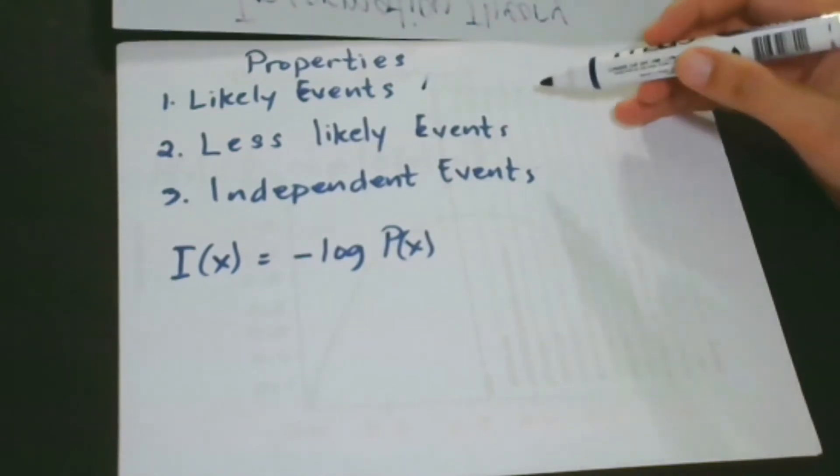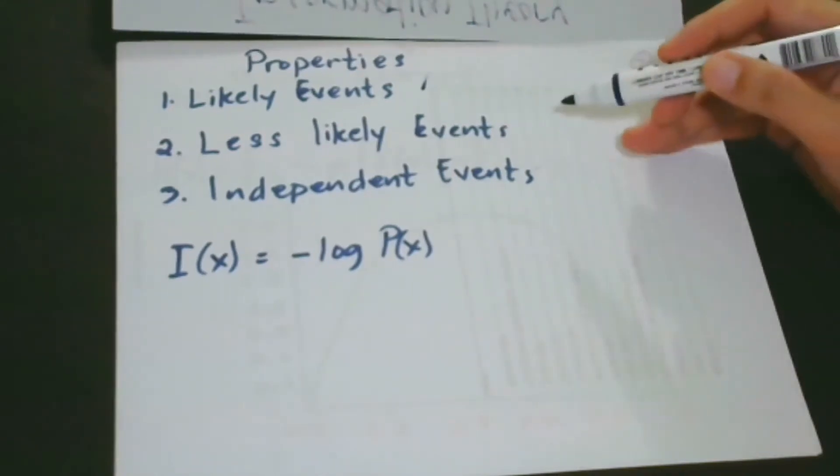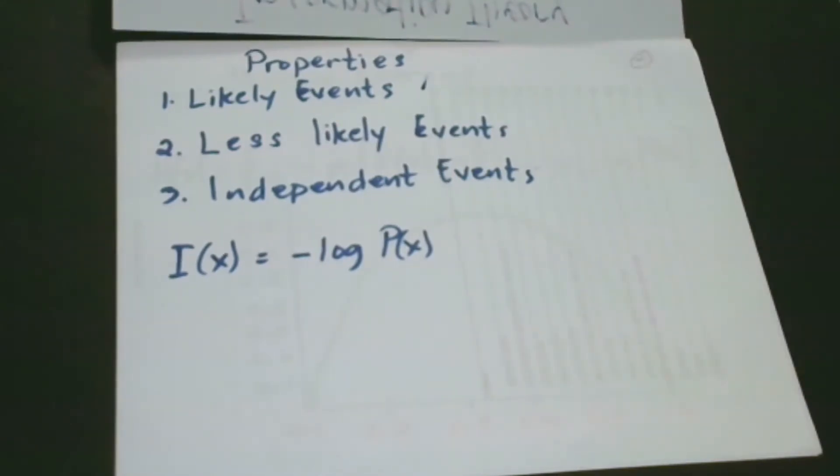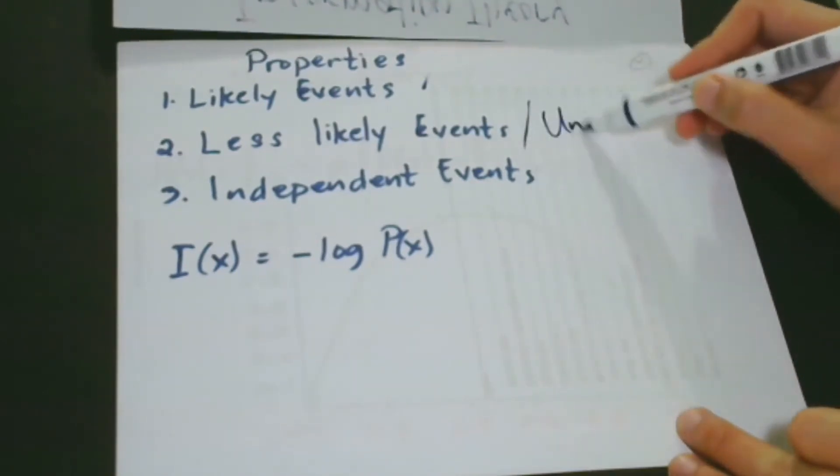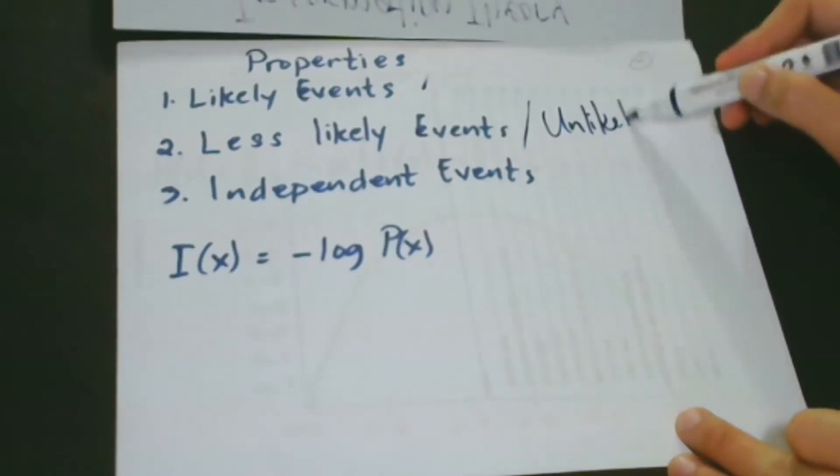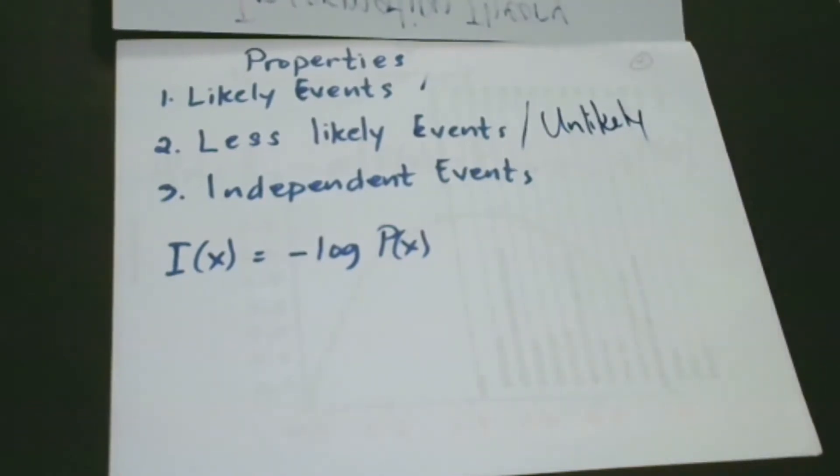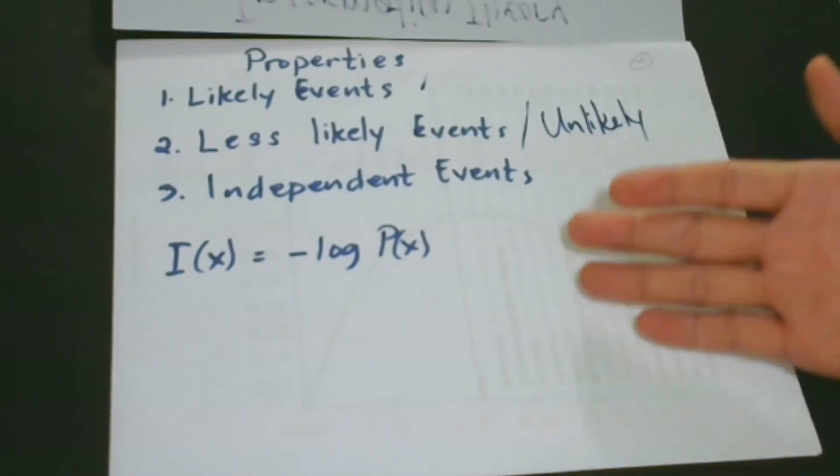Then let's go to number two. Less likely events have higher information. Less likely. Or we could say unlikely. These events have higher information. Then we have number three, independent events. Independent events provide additional information.